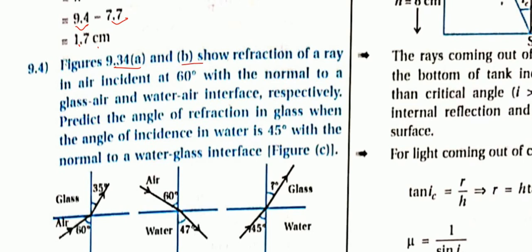Figure 9.34: Parts A and B show refraction of a ray in air incident at 60 degrees with the normal — first at a glass-air interface, then at a water-air interface. The direction is from air into glass in figure A, and from air into water in figure B, as determined by the arrow direction.